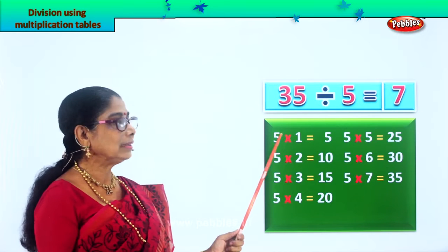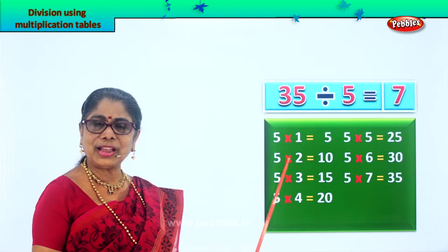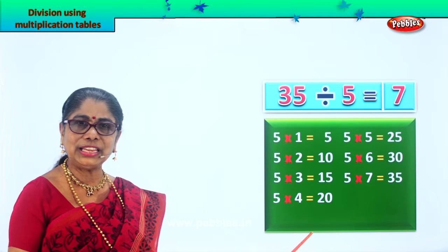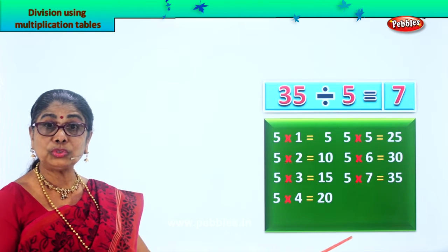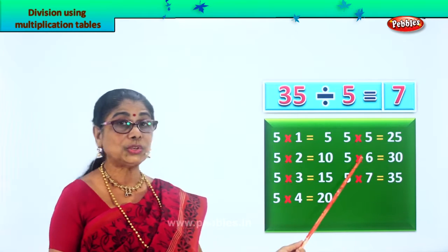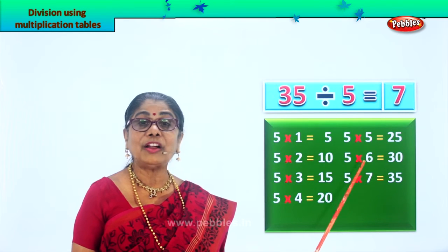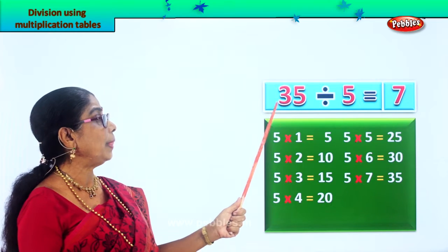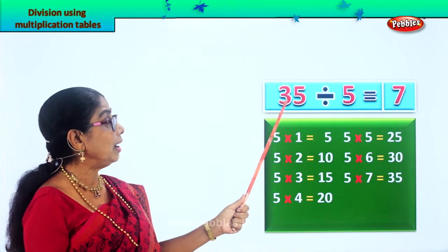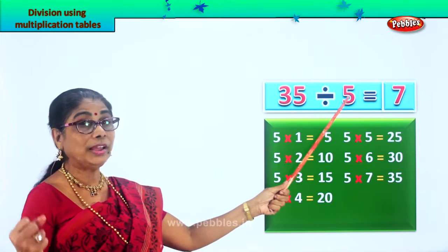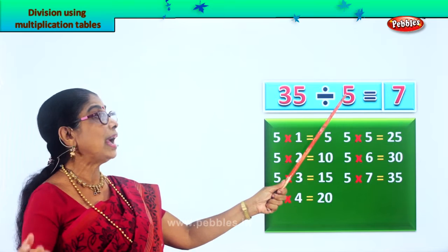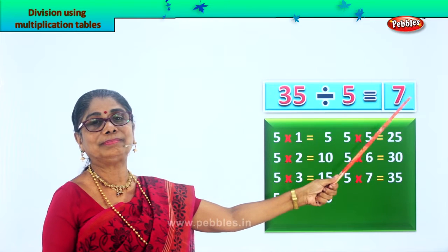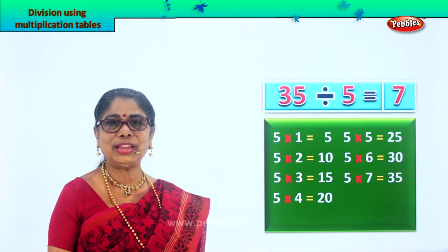5 ones are 5, 5 twos are 10, 5 threes are 15, 5 fours are 20, 5 fives are 25, 5 sixes are 30, 5 sevens are 35. 35 divided into 5 groups and you get 7 in each group.